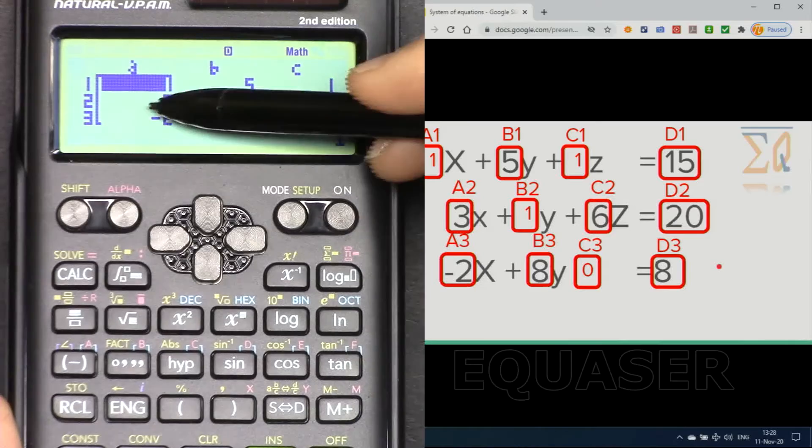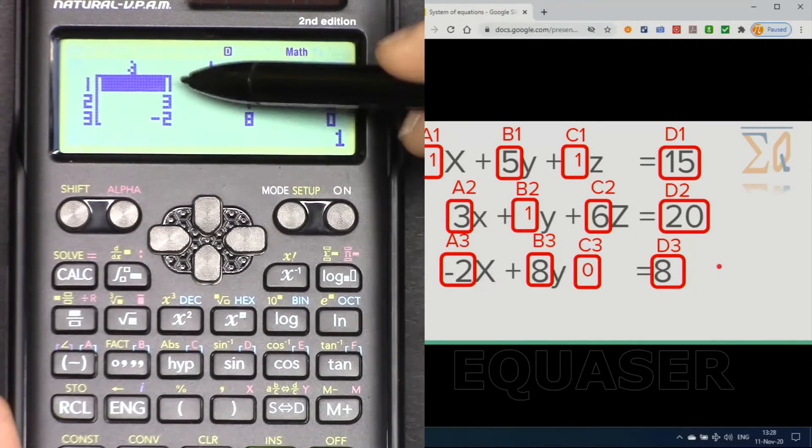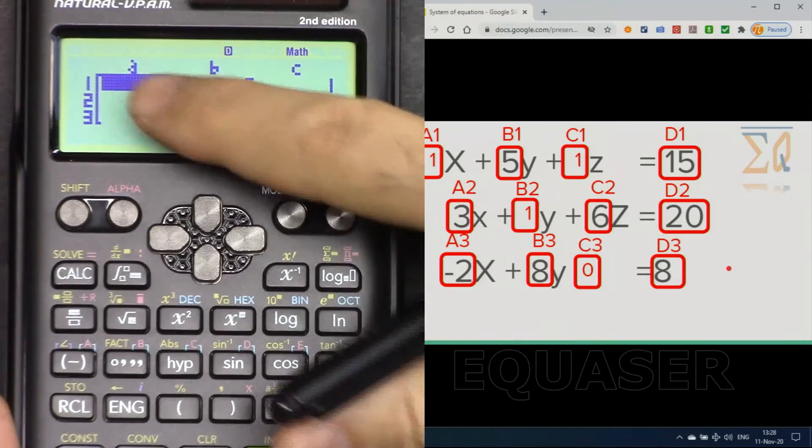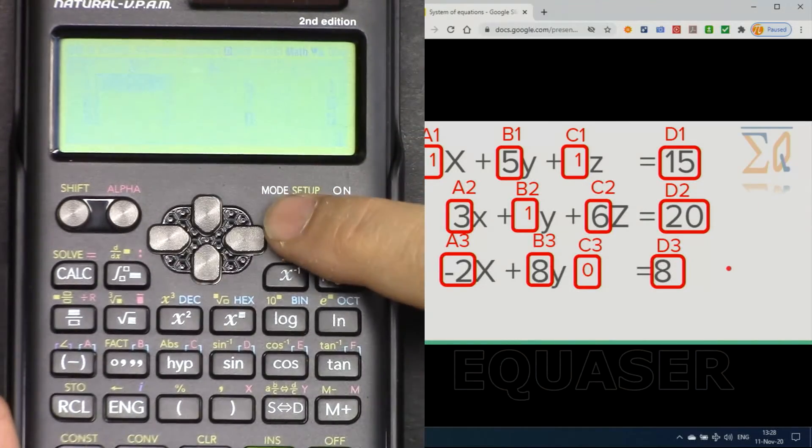If I press it again I will be presented back with this screen to enter new values if you have another equation. To exit from this screen press mode and then 1.